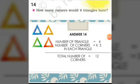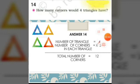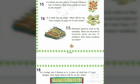How many corners would 4 triangles have? The number of triangles is 4 and the number of corners in each triangle is 3. So the total number of corners will be 4 times 3, which is equal to 12. Now let us solve the next 4 sums from the textbook, page number 138.